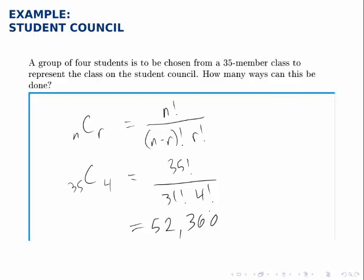So there are 52,360 ways to choose four items from a pool of 35 items.